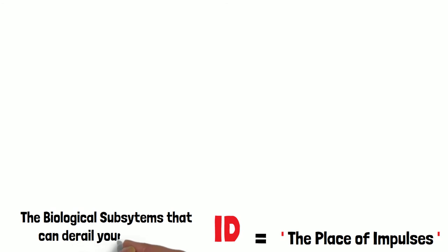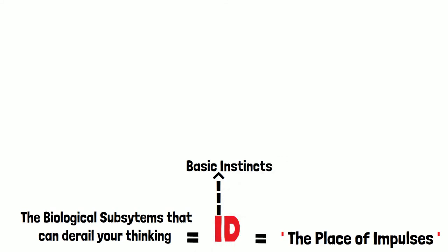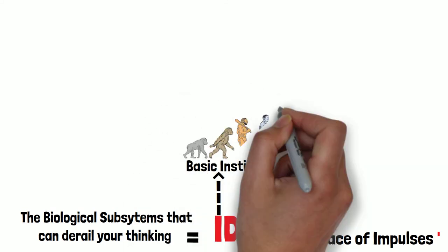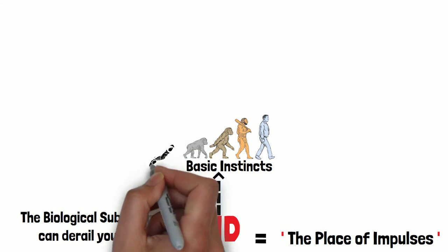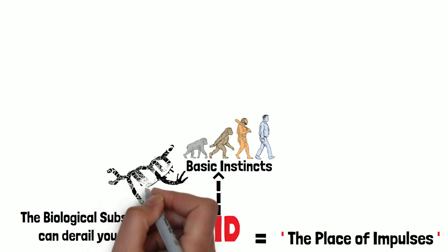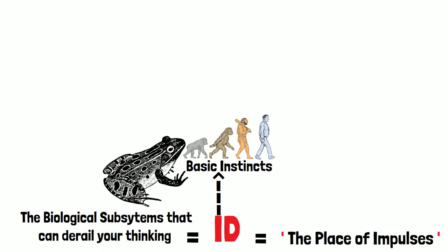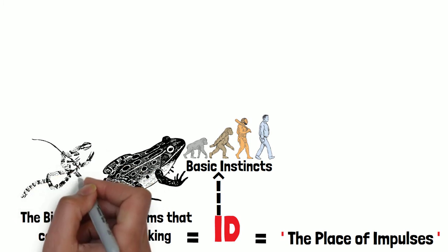And you could think about those as the biological subsystems that can derail your thinking, that govern things like hunger and sex and aggression and your basic instincts. It's a reasonable way of thinking about it because these are subsystems that you share with animals. You share them certainly with mammals, you share most of them with reptiles, you share a lot of them with amphibians, and even going all the way down to crustaceans there's commonality, for example in the dominance hierarchy circuits. And so these are very, very old things.